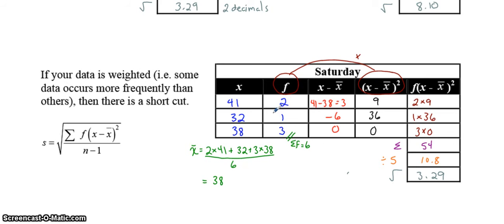So when you have frequencies, you can shorten your work by just adding in these extra columns. It may not have been a big deal for this because there was only six pieces of data, but if you have a lot of data, this could be a real time saver.